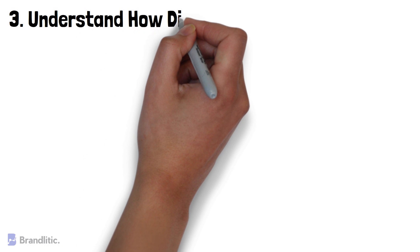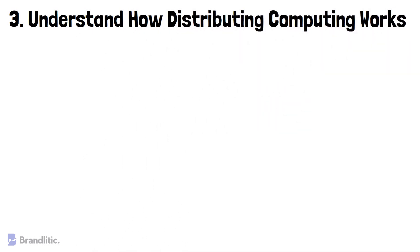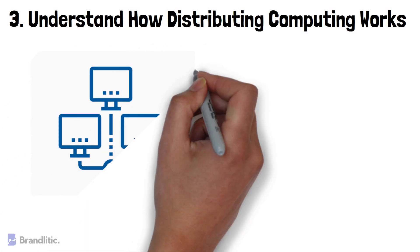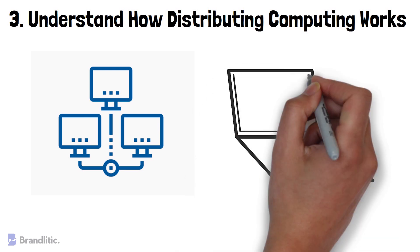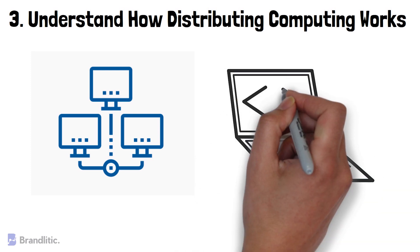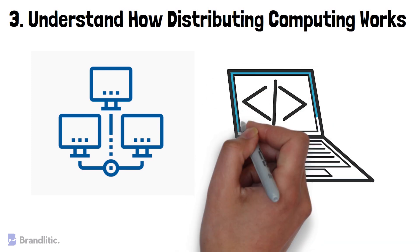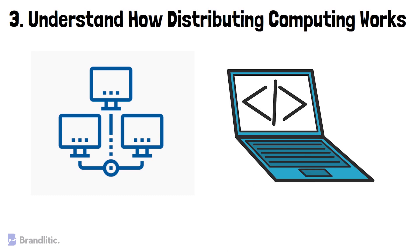3. Understand How Distributed Computing Works. When you start working in the blockchain industry, you will encounter distributed computing everywhere. The best term to use that describes the industry is Distributed Ledger Technology, or DLT, where you can focus on wider technologies that work on the idea of decentralization but have different approaches as well.